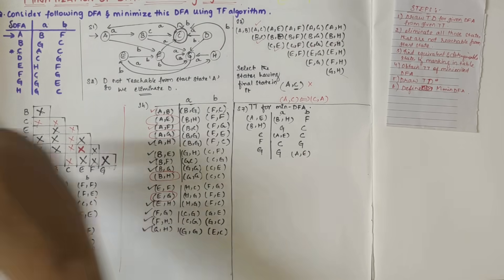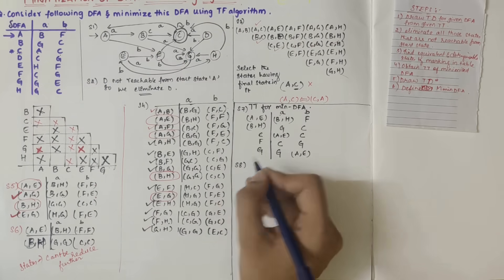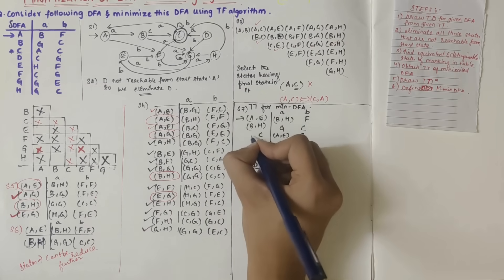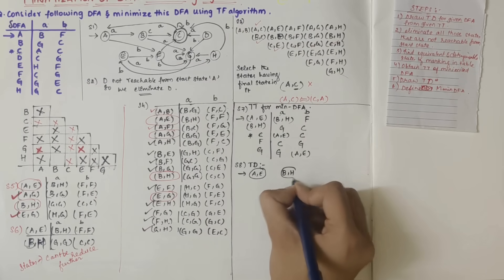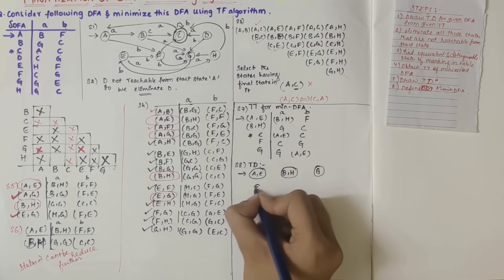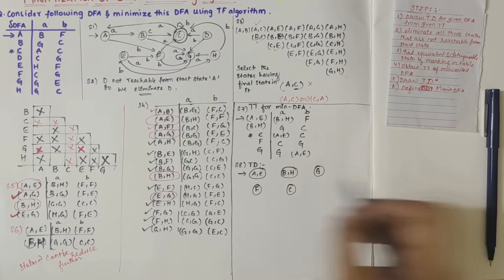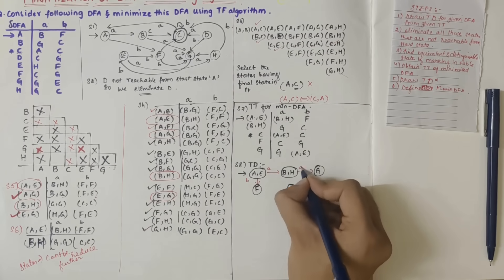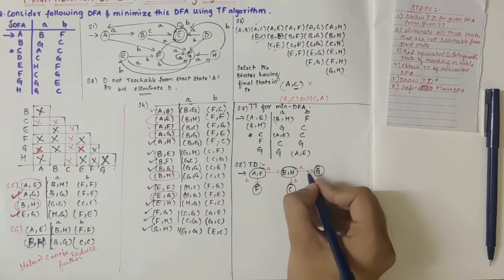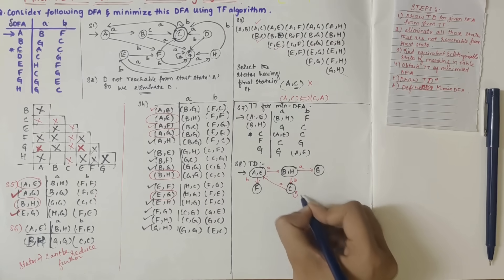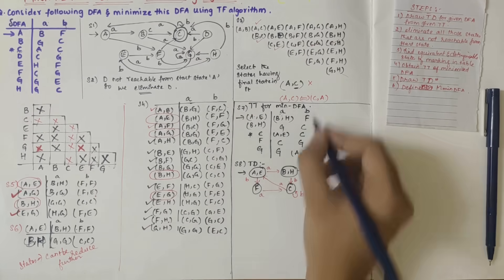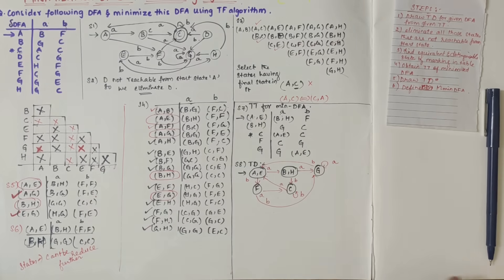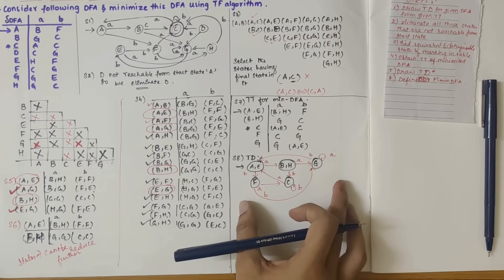Drawing the final transition diagram: a-e is the start state, c is the final state, with states b-h, g, f, and c. Transitions: a-e on a gives b-h, a-e on b gives f, b-h on a gives g, b-h on b gives c, c on a gives a-e, c on b gives c itself, f on a gives c, f on b gives g, g on a gives g itself, g on b gives a-e.